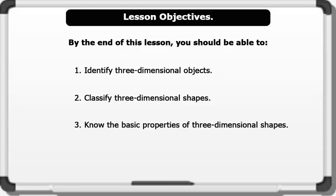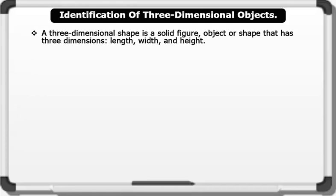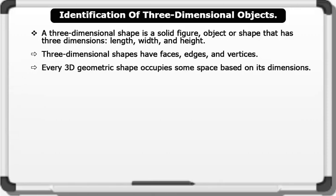Identification of three-dimensional objects: A three-dimensional shape is a solid figure, object, or shape that has three dimensions—that is, length, width, and height. Three-dimensional shapes have faces, edges, and vertices. Every three-dimensional geometric shape occupies some space based on its dimensions. We can see many 3D shapes all around us in our day-to-day life.